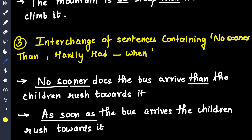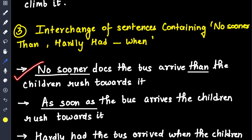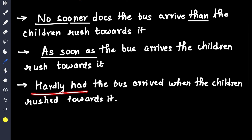Interchange of sentences containing no sooner than, hardly had, when. First: 'No sooner does the bus arrive than the children rush towards it.' You can try it yourself — place 'as soon as' in the sentence without changing the meaning: 'As soon as the bus arrives, the children rush towards it.' Make sure to insert commas and full stop wherever necessary. Then: 'Hardly had the bus arrived when the children rushed towards it.'